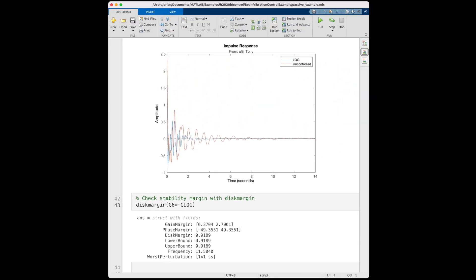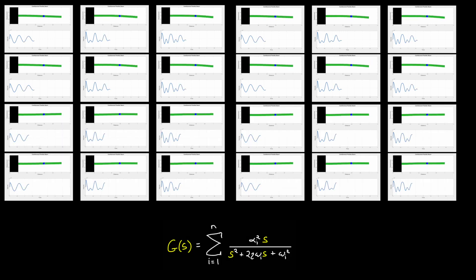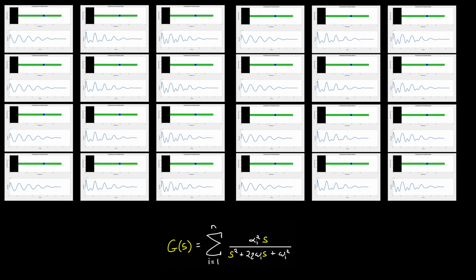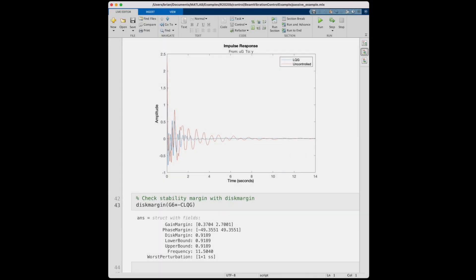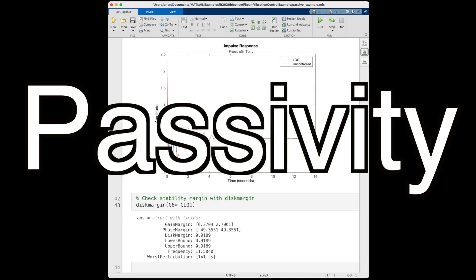Before we panic too much with this change in margin, we should realize that this is exactly the purpose of margin, right? It's to ensure stability in the presence of uncertainty. So we did in fact eat up some of our margin with this uncertainty, but it was exactly as intended. But this drives the question: is the system still stable if we add 12 modes or 24 modes to our model? And what if we're off on the mode frequencies or the mode shape? Do we have enough margin to guarantee stability in these conditions?